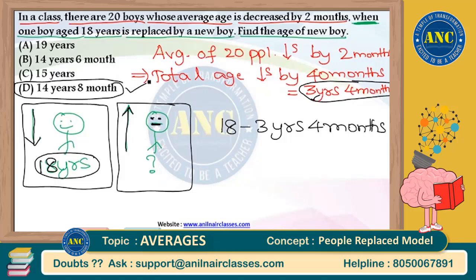This is exactly what I want to teach you. The first question is the case where the average increases, and the second question is the case where the average decreases. Whatever it is, if you know the concept, you can rule the world. If you know the concept, you can definitely rule aptitude. It is a statement — you can bet on it.